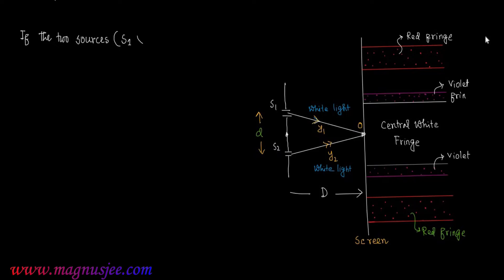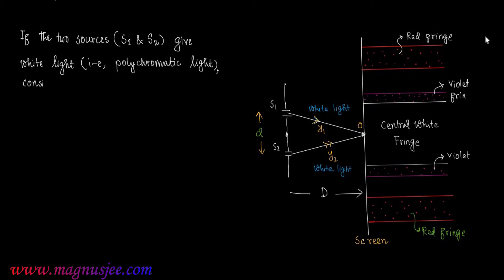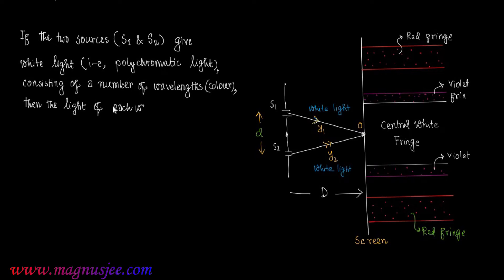If the two sources S1 and S2 give white light, that is polychromatic light consisting of a number of wavelengths or colors, then the light of each wavelength gives rise to its own set of interference fringes.